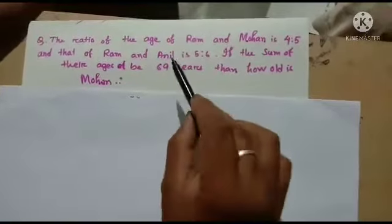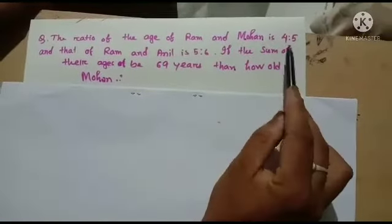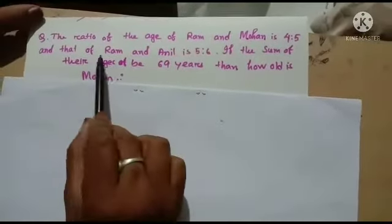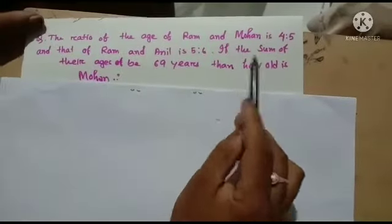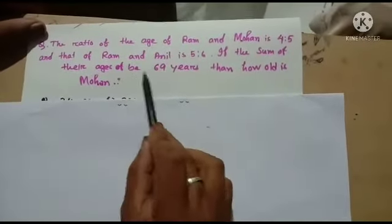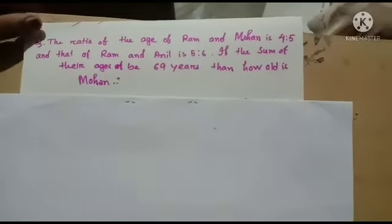The ratio of the age of Ram and Mohan is 4:5 and that of Ram and Anil is 5:6. If the sum of their ages is 69 years, then how old is Mohan?